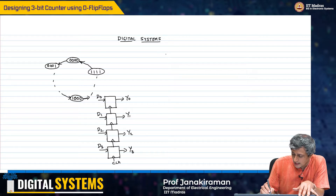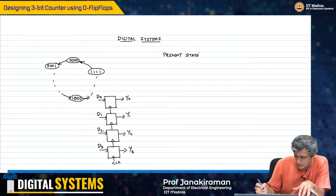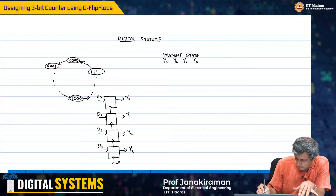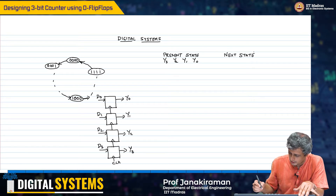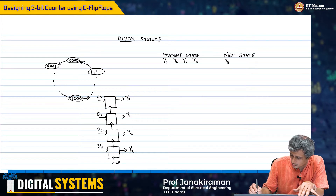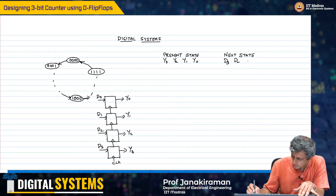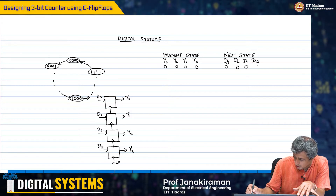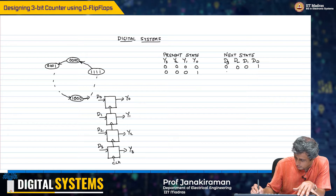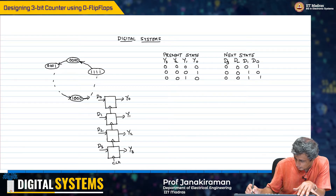Let us look at the design now. The present state columns are y3, y2, y1, y0, and the next state columns are the inputs d3, d2, d1, d0. So if the present state is 0, 0, 0, 0, I want to go to 0, 0, 0, 1. Then from 0, 0, 0, 1, I go to 0, 0, 1, 0, and so on.